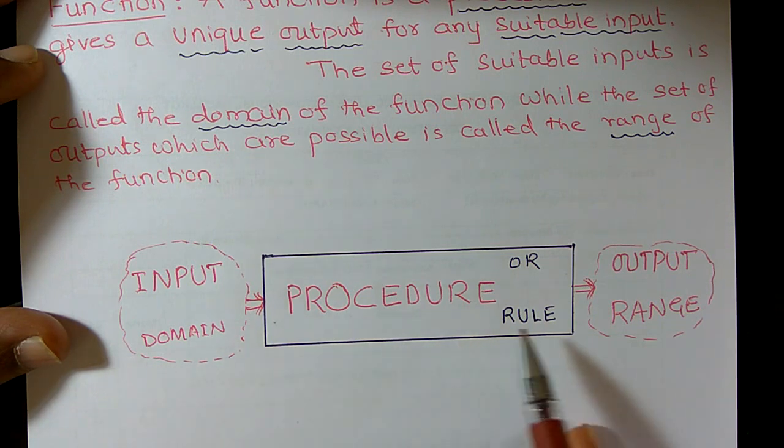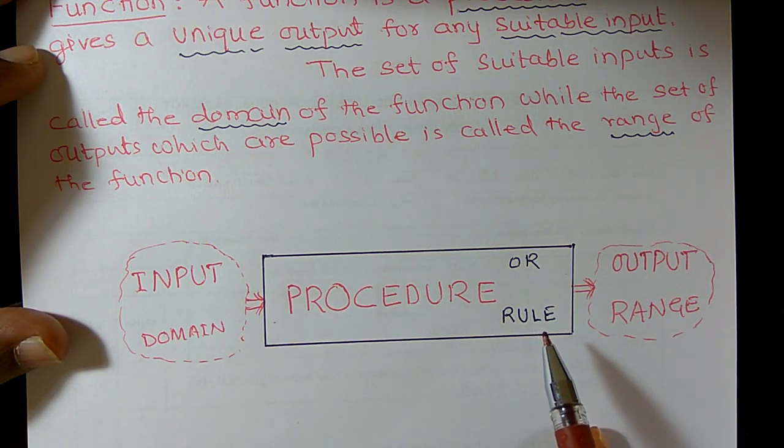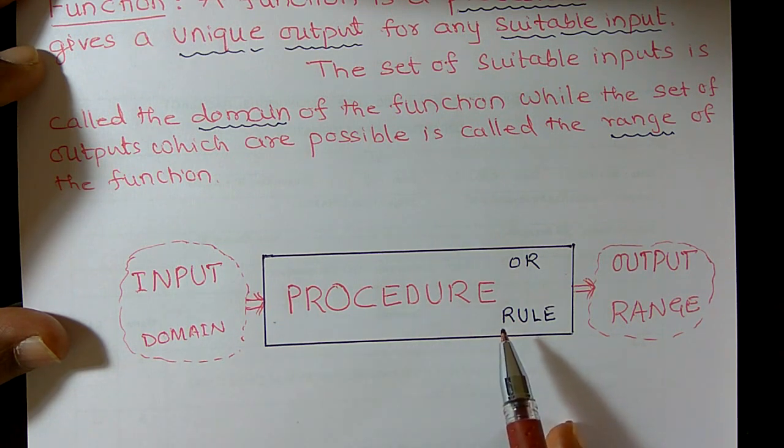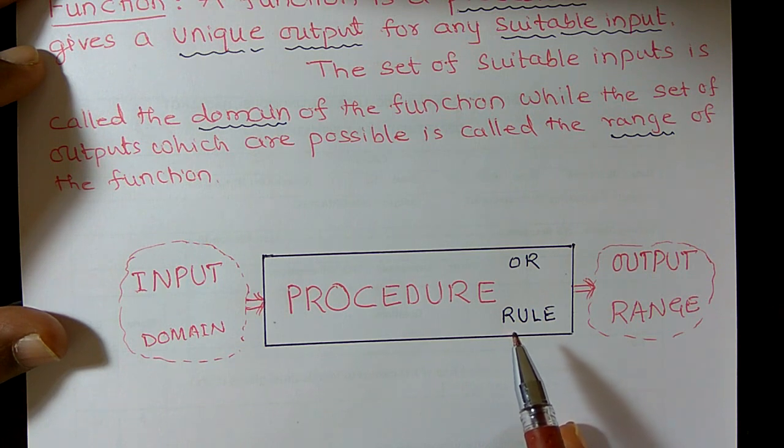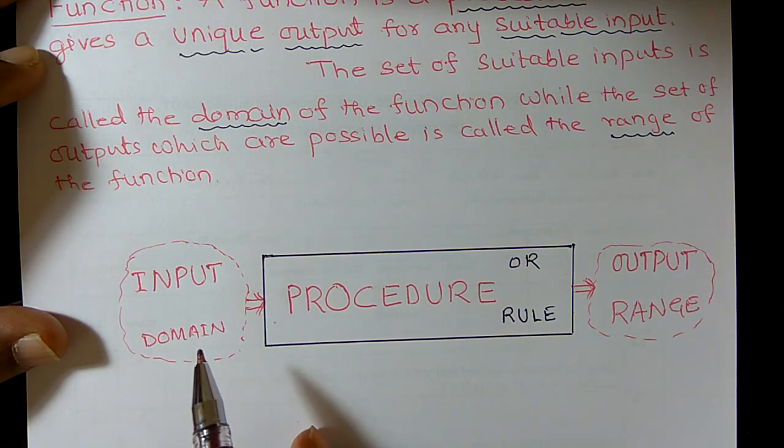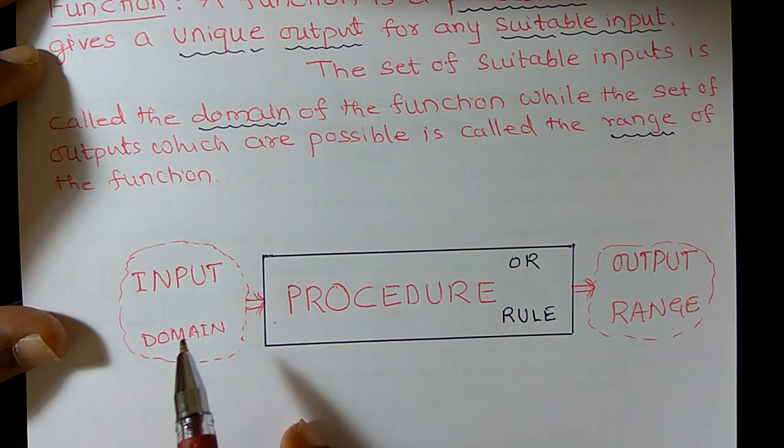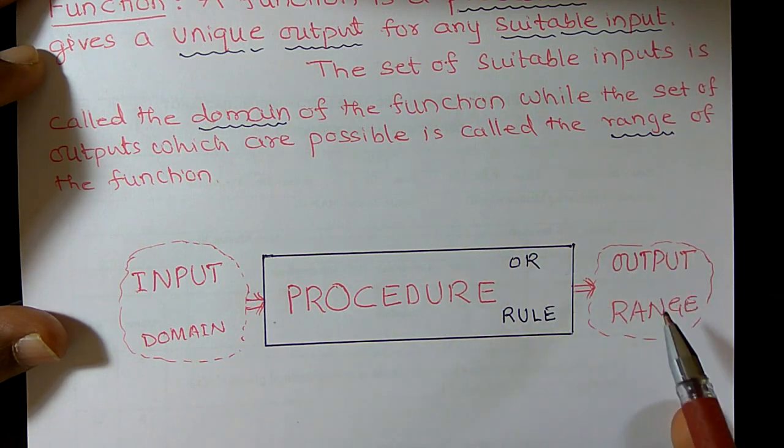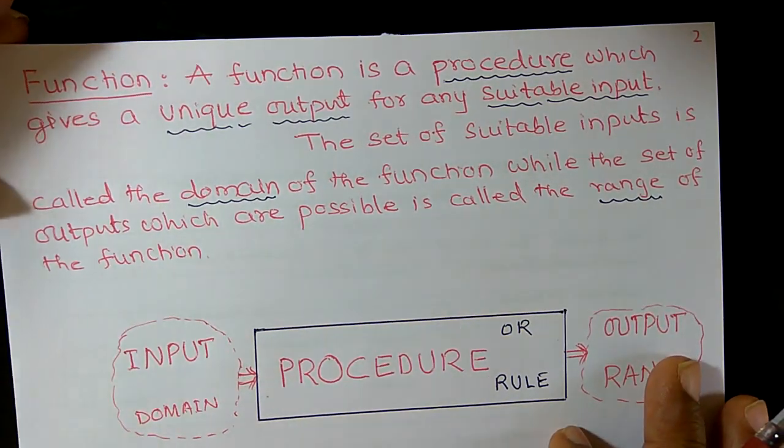Now I want to compare this diagram with an ATM machine. Suppose if I want to use an ATM machine, I should know the procedure of ATM machine. I can insert a card into the machine, then I have to type a correct pin, then denominations whether I want to draw 100 rupees, 500 rupees, or 1000 rupees. According to that, then I can obtain the output. So it is a good example of a function.